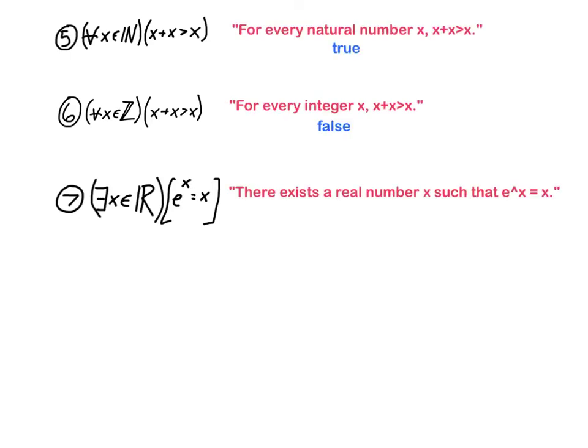So number five says that for every natural number x, x plus x is greater than x. If you subtract x from both sides, that just says that x is bigger than 0. And it's certainly true that every natural number is greater than 0. So it's a true statement.